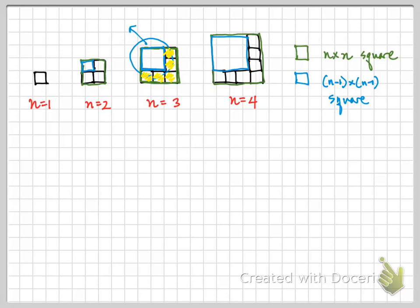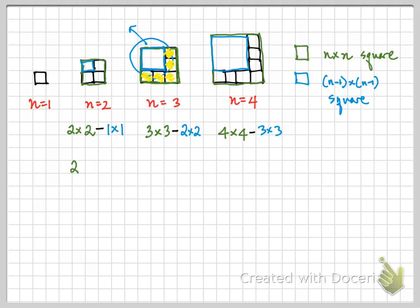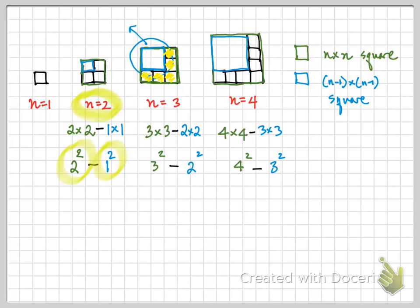Let's start with n=2: I have a 2×2 square and a smaller 1×1 square, and since we're taking away the 1×1 from the 2×2, the operation is subtraction. We write 2×2 as 2-squared because visually it literally is a square. For n=1, the first number is always the same as n and the second is always 1 less, so I get 1² − 0², which equals 1. For general n, the number of squares is expressed algebraically as n² − (n−1)².